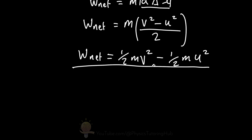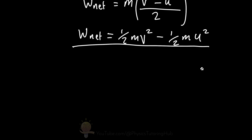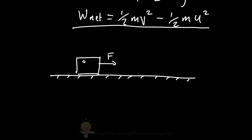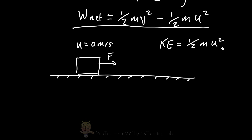We have a kinetic energy term for the object at its final velocity and a kinetic energy term at its initial velocity. Going back to our block being pushed by a constant force, let's say the initial velocity is zero meters per second, which means its initial kinetic energy is also zero, since ½ × mass × 0² = 0.